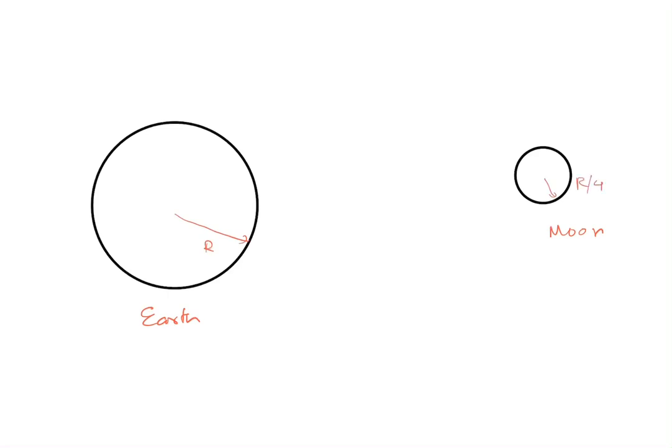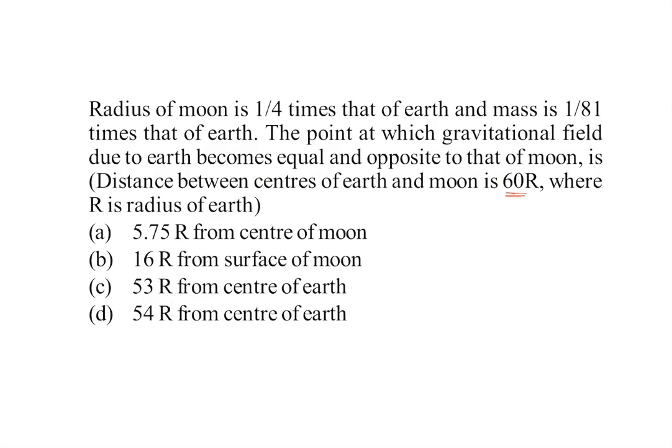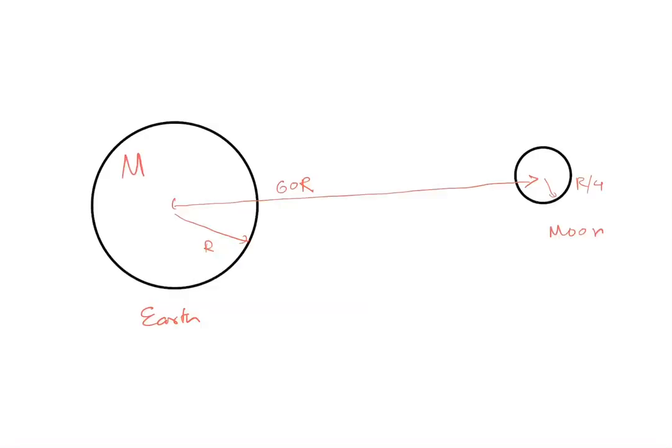Distance between their centers is given to be 60R. Now if the mass of earth is M, then mass of moon is 1/81 times that of earth, so mass of earth is M and mass of moon is M/81. Now we have to find a point somewhere in between.